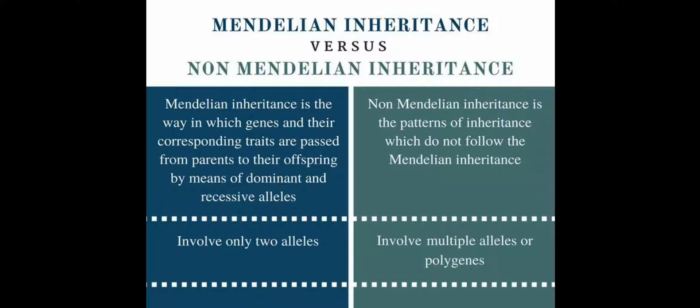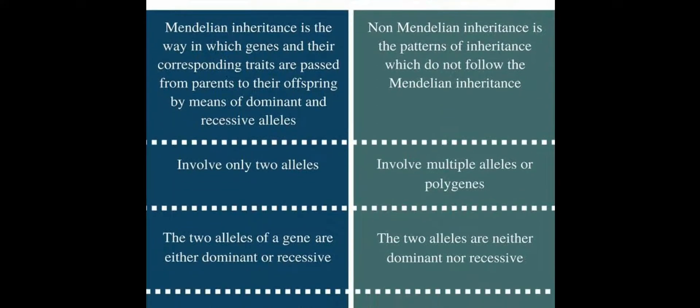Mendel divided alleles into two forms: dominant and recessive. A gene has two alleles — dominant and recessive. Non-Mendelian inheritance is a pattern of inheritance which does not follow Mendelian rules. Non-Mendelian inheritance can also transfer genetic characters from one generation to another, but without a particular dominant and recessive allele structure. Mendelian inheritance involves only two alleles.